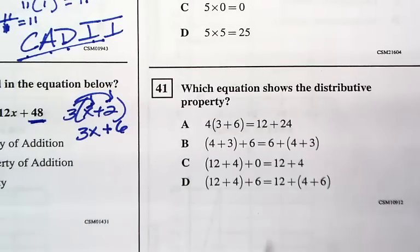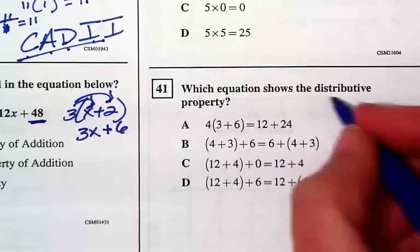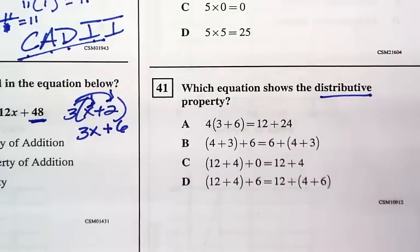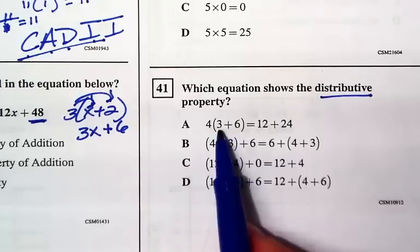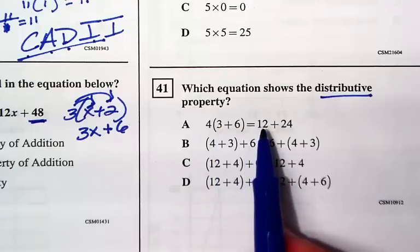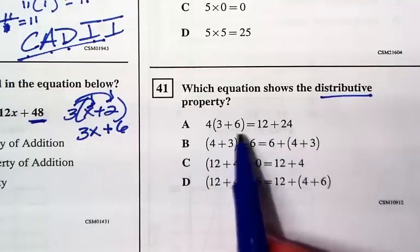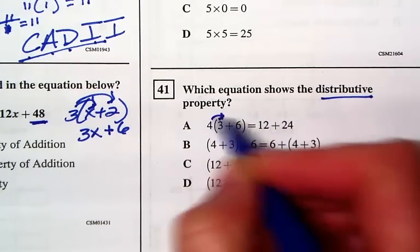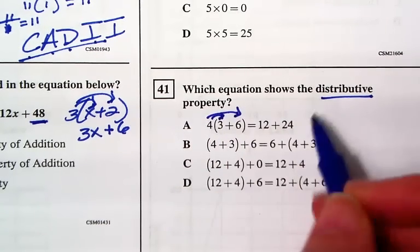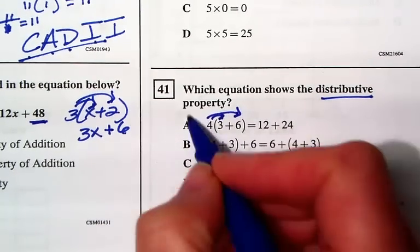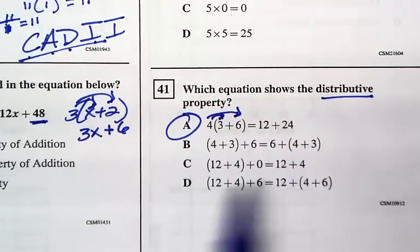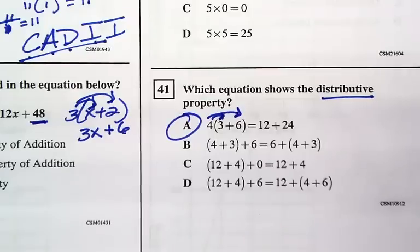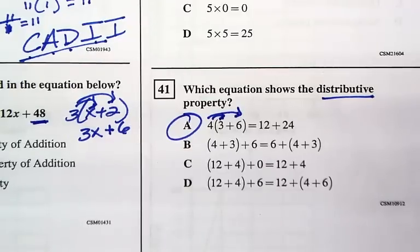For 41, which equation shows the distributive property? Distributing the love — I have one term multiplying the parenthesis, and then I have the individual terms. Let's see if that works: 4 times 3 is 12, and 4 times 6 is 24. So that's the distributive property. This other one, you're not multiplying anything — it's just addition. The only one that's distributing is answer C.